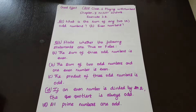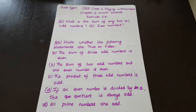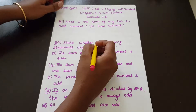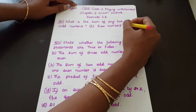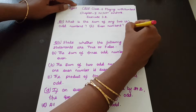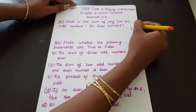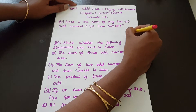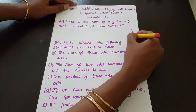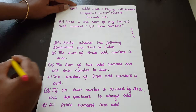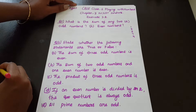Question No. 1: What is the sum of any two odd numbers — even numbers? So, odd numbers and even numbers sum. Sum means total. Odd numbers are 1, 3, 5, 7, 9. These are all odd numbers.